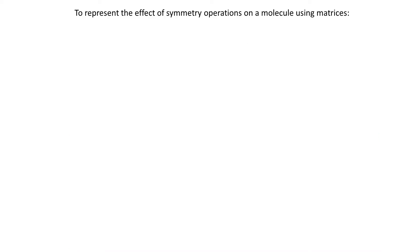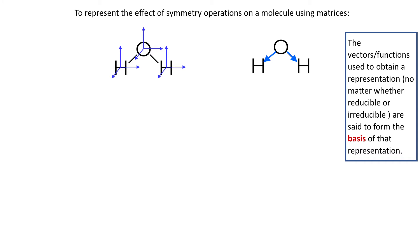So far we said that we want to represent the effect of symmetry operations using matrices. In order to do that we can take some vectors and place them in some strategic places in a molecule, for instance along the bonds or at every atom of the molecule. These vectors are said to form bases of the representation.